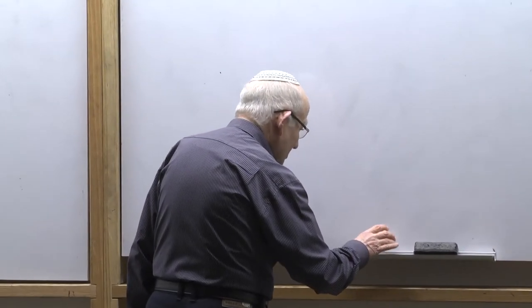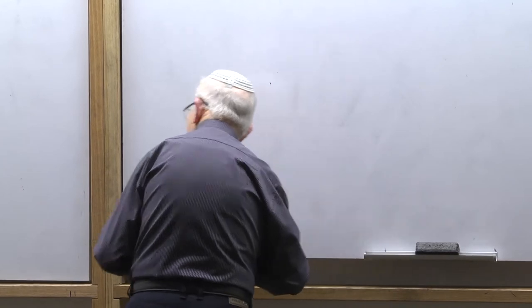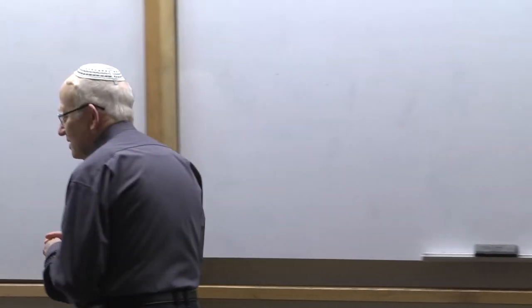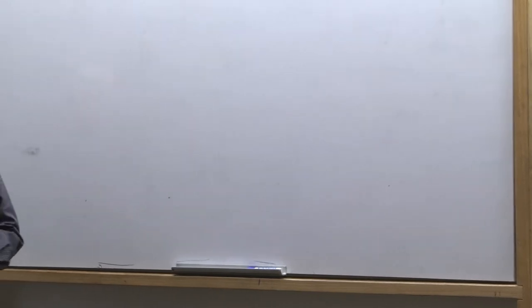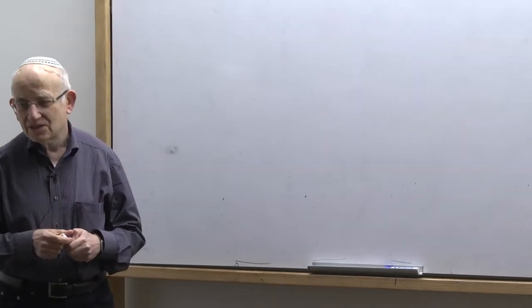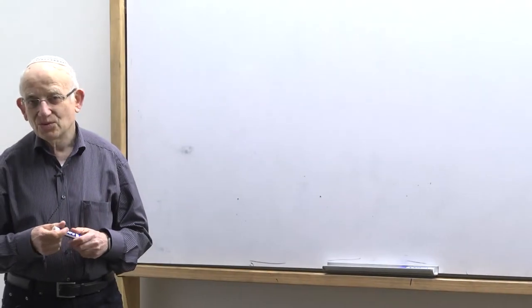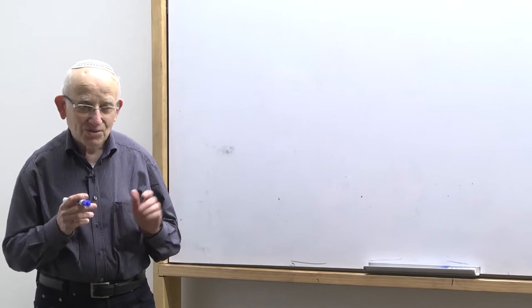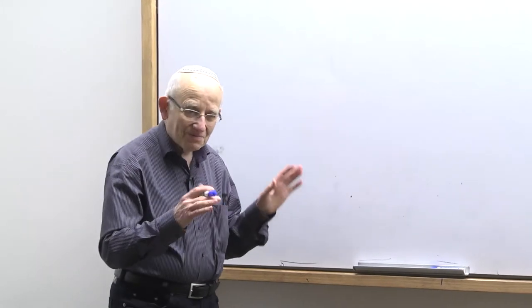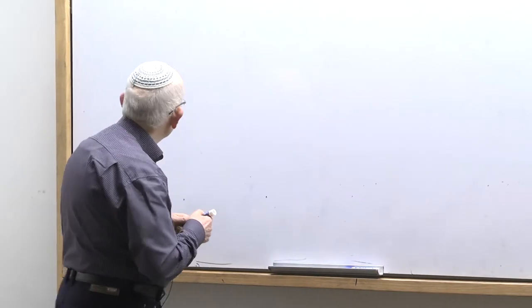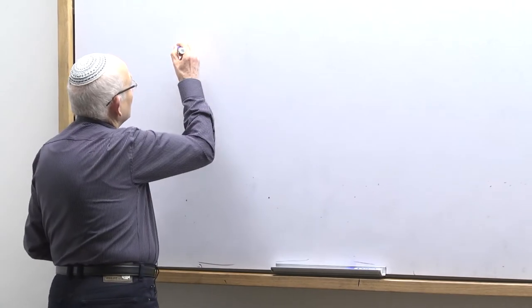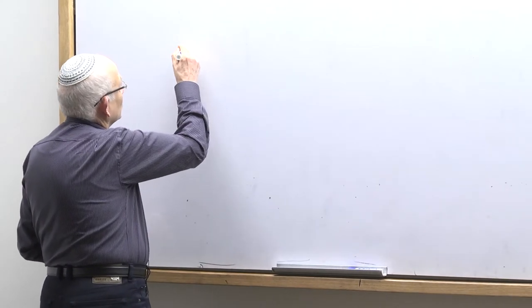Last time I started to discuss AQA and derived categories, and there was a question whether it is the same as Milner's construction. I would like to explain that it's not the same. It is close, but not the same. I want to recall.